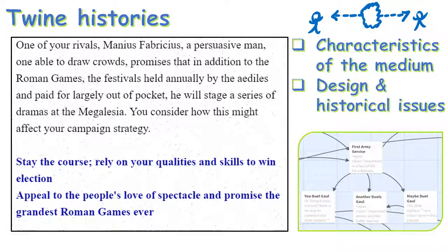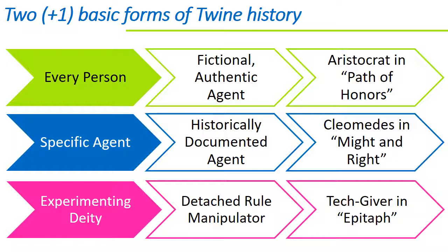Let's consider the characteristics of Twine histories — using Twine as a medium — and some of the design issues and historical issues raised by using this medium. Note that this is only my view, and one could approach Twine in equally valid but different ways. At its heart, Twine is about reading text and then clicking to go to other texts, so there's a lot of variety here. There are two basic forms of agent-based Twine history, and then a third that's not quite that.